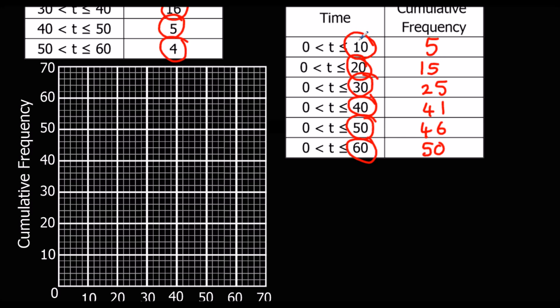So we're plotting 10 against 5 on cumulative frequency. So that's in the middle there. 20, 15. So 15 should be in there. 30 against 25. 40 against 41. 50 against 46. And 60 against 50.